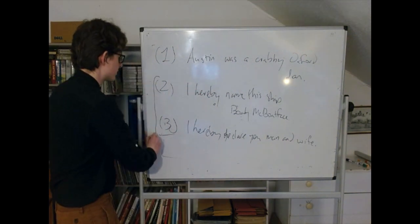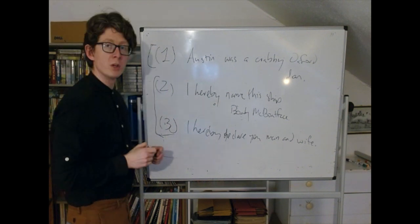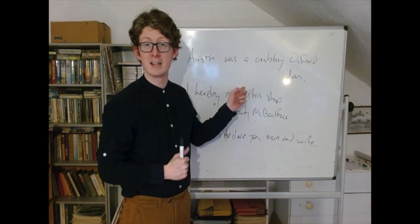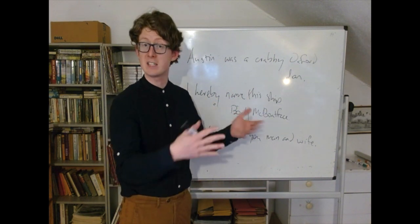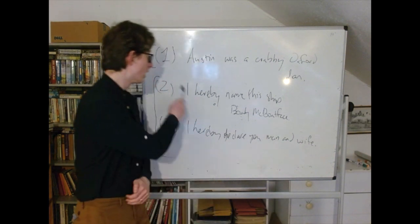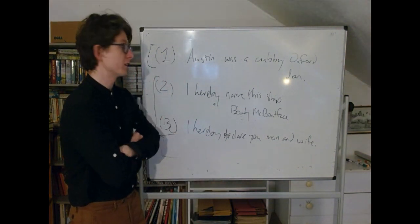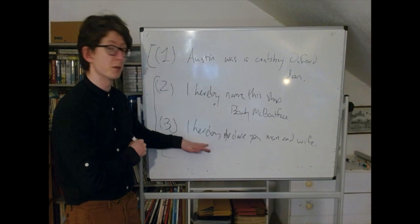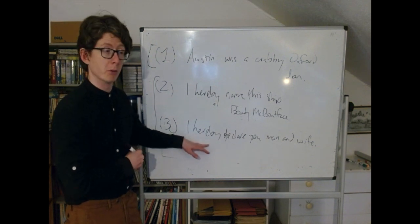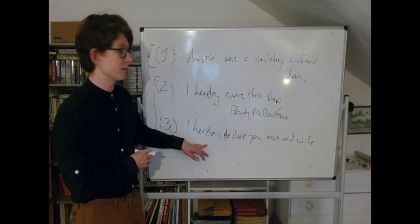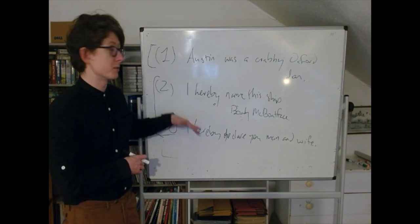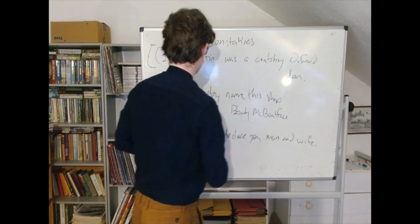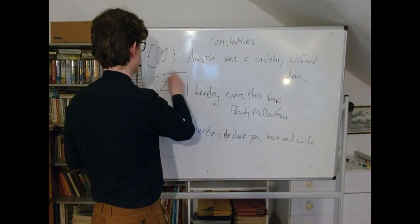That's a really interesting distinction between sentences two and three versus one, because sentence one doesn't seem to do that. It may or may not be true that Austin was a crabby Oxford Don, but my saying it has nothing to do with whether it's a fact. It's a fact independently of whether anybody ever said it. Not so with these two — in certain cases, saying these things suffices to make it so. We're going to call the first type constantives, and the latter two performatives.